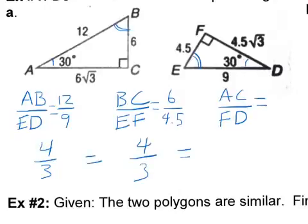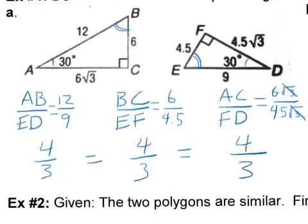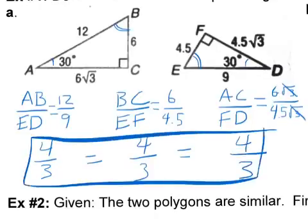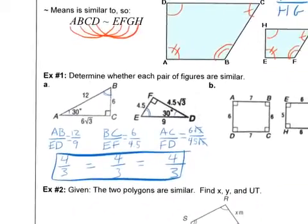Let's check the last one. AC is 6 rad 3 over 4.5 rad 3. Well, that ratio is obviously the same as this one here because rad 3s just cancel out and you're left with 6 over 4.5. So, that must be 4 over 3 as well. Since they are all equal, we can say, yes, that these are, in fact, similar. Yes, they are. Checkmark. Yes, they're similar.